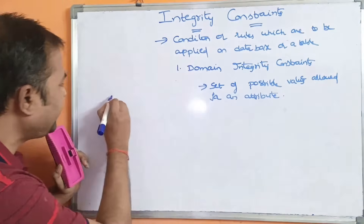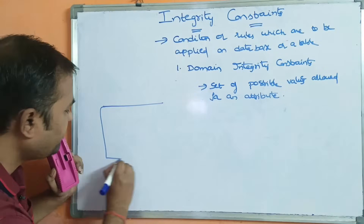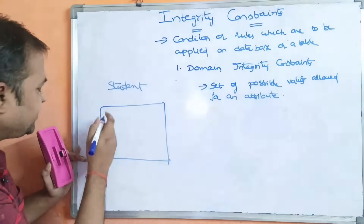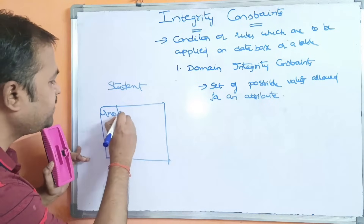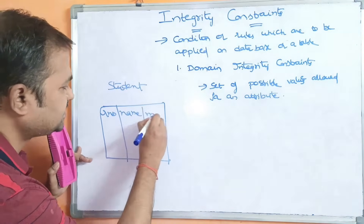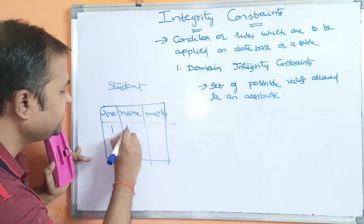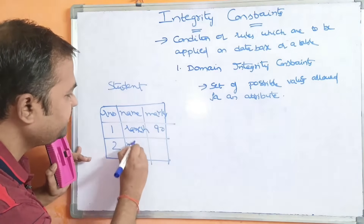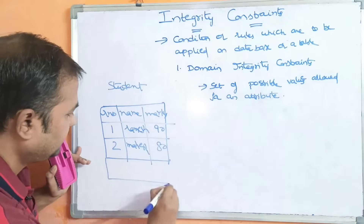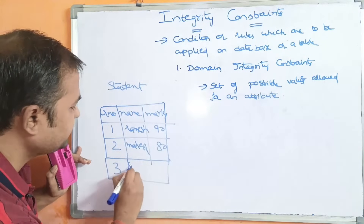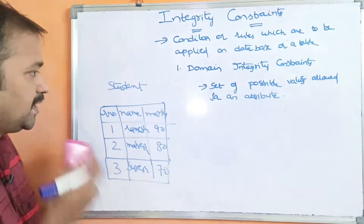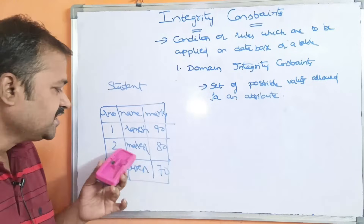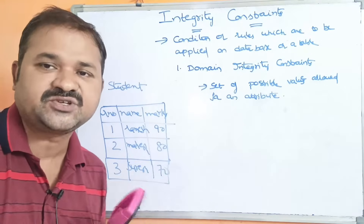If you take a table — let the name of the table be 'student.' In the relational model, we can call a table a relation also. Let the student relation have fields: roll number, name, and marks. Row 1: roll number 1, name Ramesh, marks 90. Row 2: roll number 2, name Mahesh, marks 80. Row 3: roll number 3, name Suresh, marks 70. Here, domain means these attribute values — 1, Ramesh, 90; 2, Mahesh, 80 — all these are called attribute values, so this is nothing but domain.